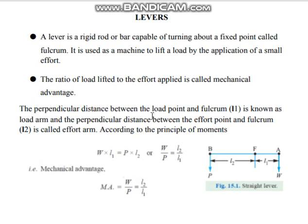The perpendicular distance between the load point and the fulcrum is known as the load arm. In the diagram, you have a lever with a central point F — that is the fulcrum — and here a weight W acts as the load. From the fulcrum to the load, that distance is the load arm, given by L1. We apply the effort P with the hand or foot, and the distance from the fulcrum to the effort point is the effort arm, given by L2.